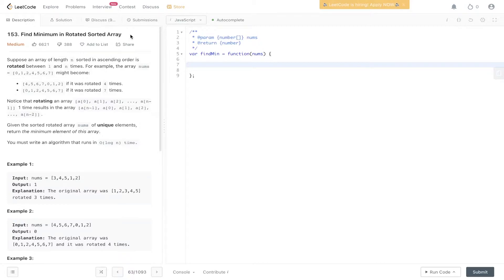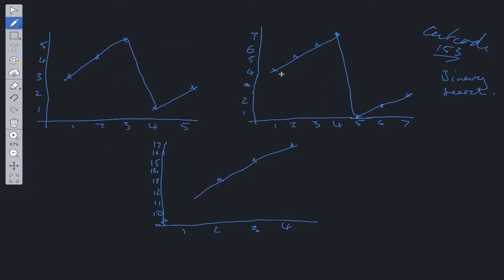With binary search, we need a left pointer, a right pointer, and a while loop to iterate through the nums array. Once we've created the left and right pointers, we grab the middle value in the nums array. Then, to find the minimum, we need to compare the middle value with the right value, because it contains the minimum here.